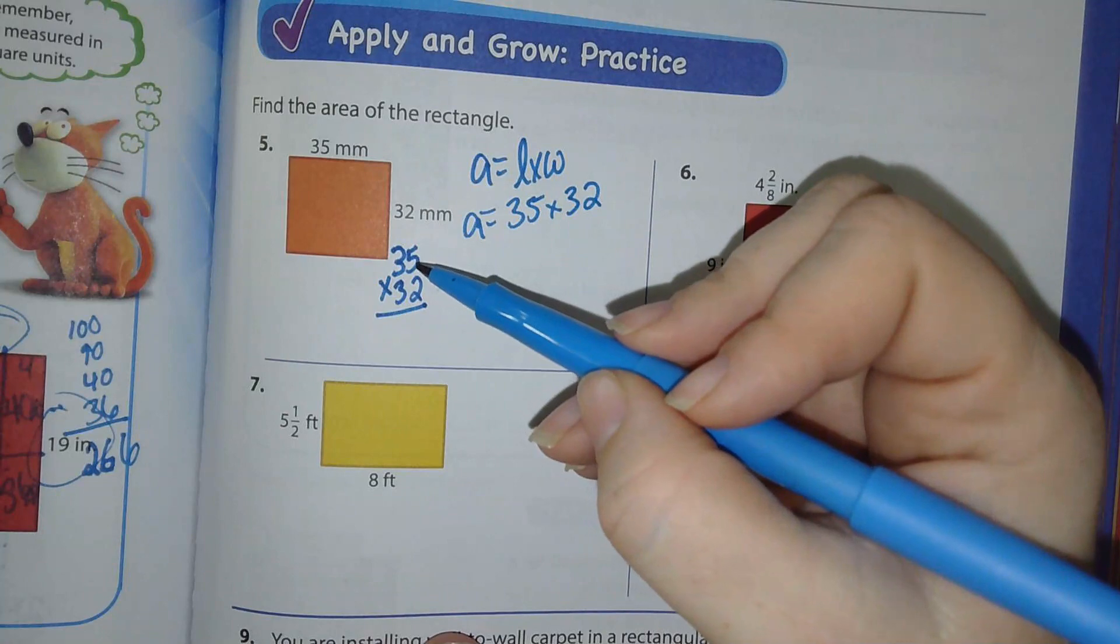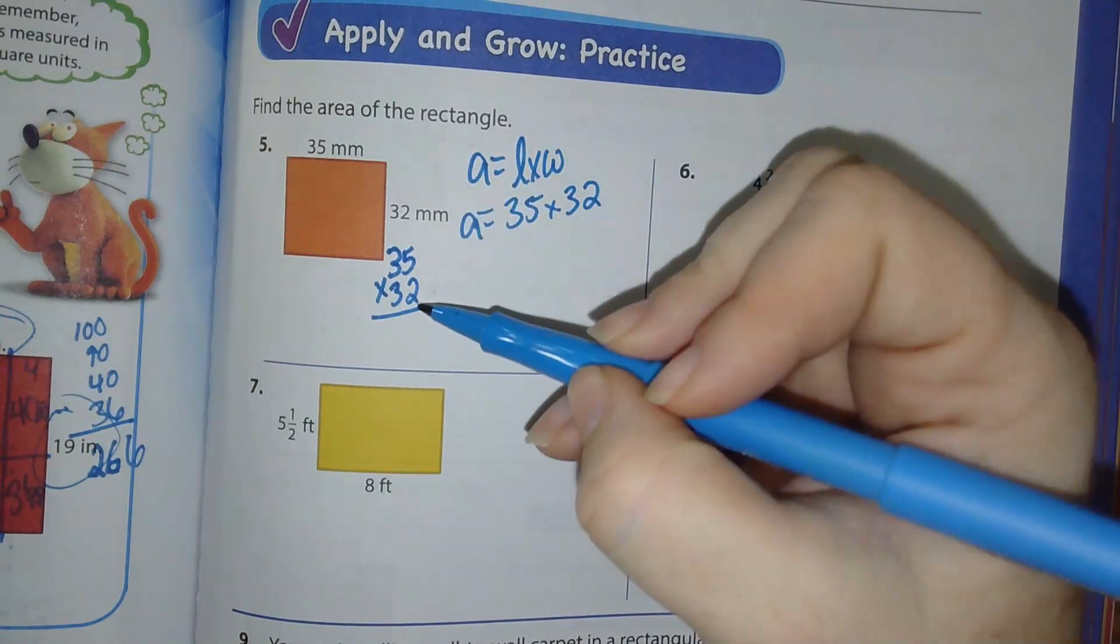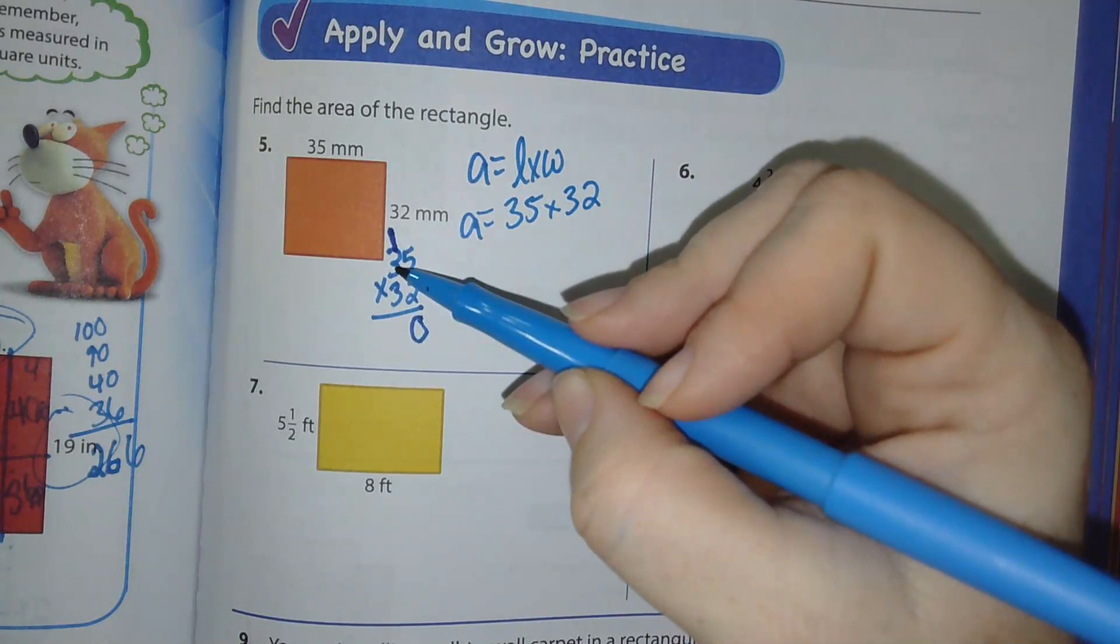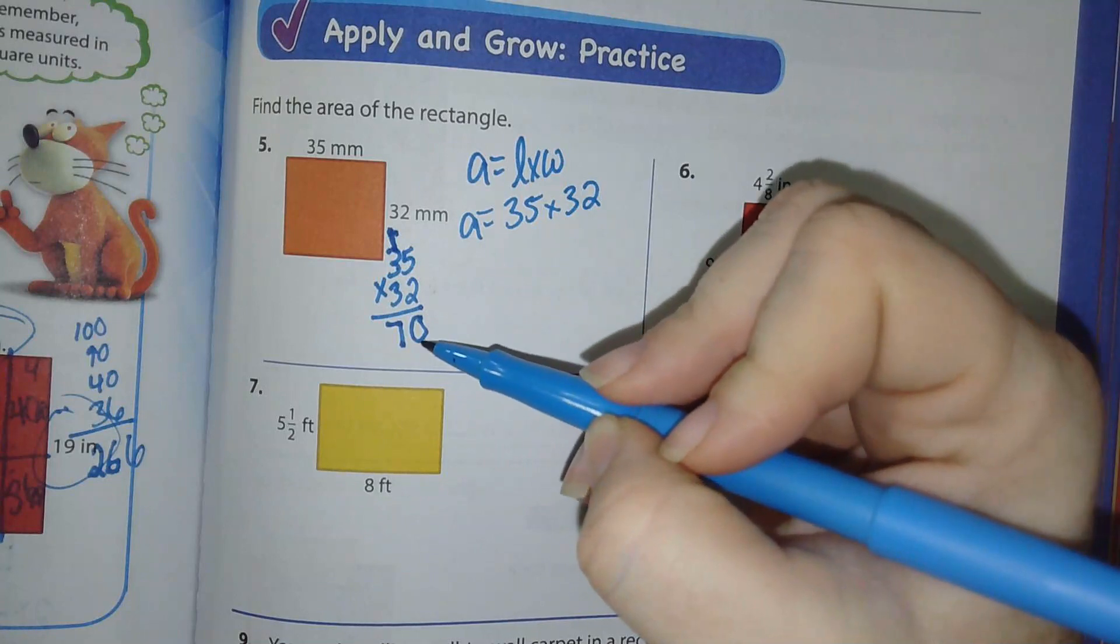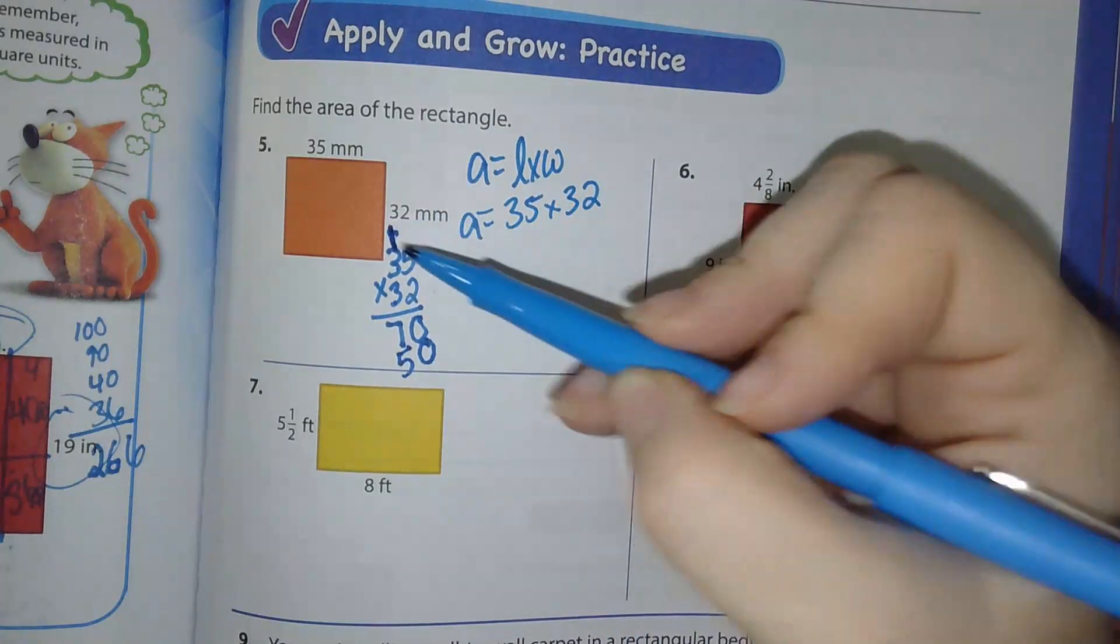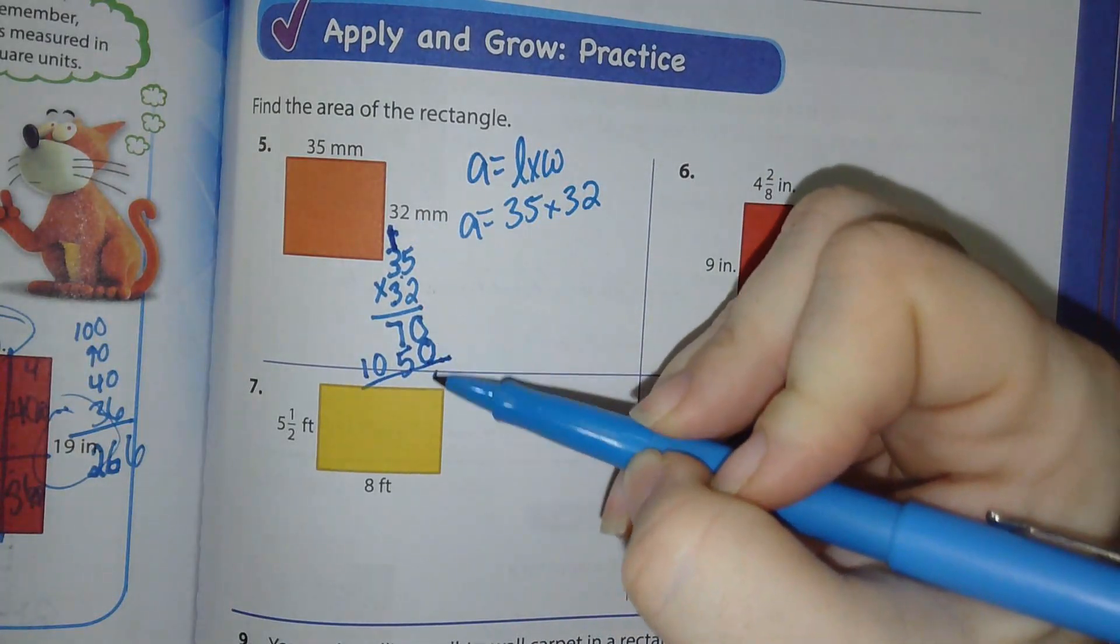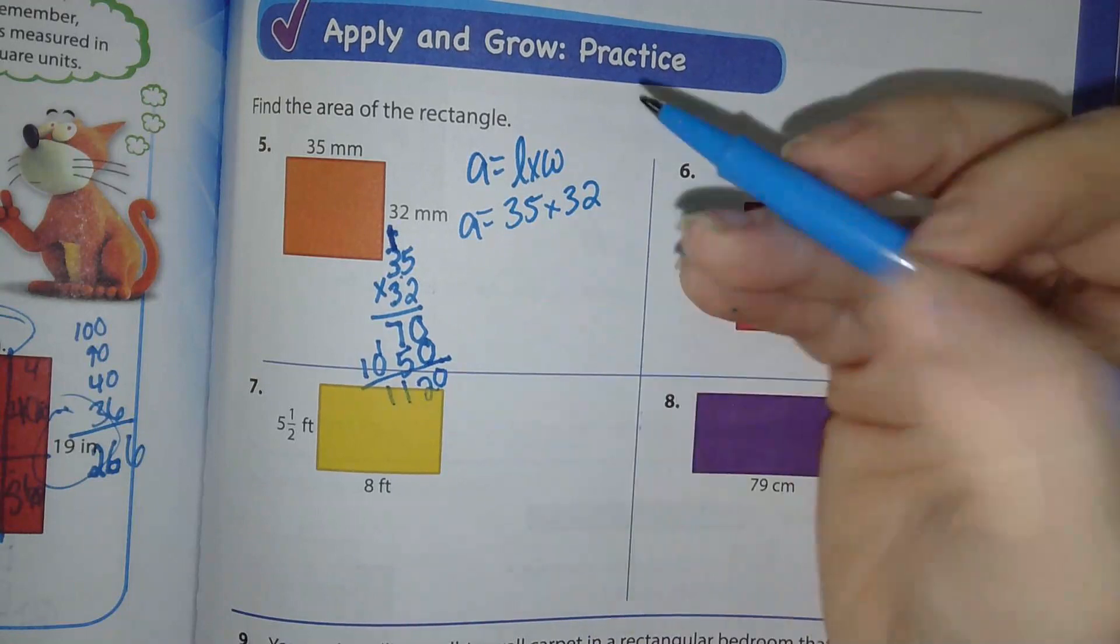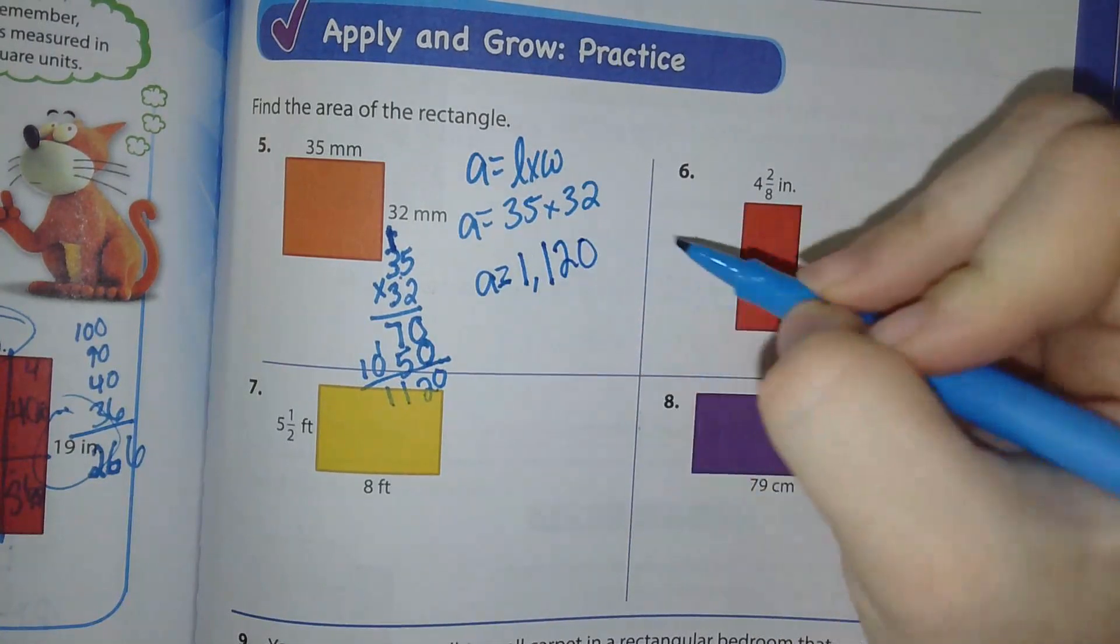2 times 5. If you're not sure how to line these numbers up, I want you to pay very close attention. Then you can go back and do it later. 2 times 5 is 10. Put your 0. Carry your 1. 2 times 3 is 6 plus 1 is 7. Now we're moving on to the 3 and the 3 is in the 10th place. So I have to put a 0 to hold my place value. 3 times 5 is 15. 3 times 3 is 9 plus 1 is 10. 0 plus 0 is 0. 7 plus 5 is 12. Carry that 1. So my answer is going to be area equals 1,120 millimeters squared.